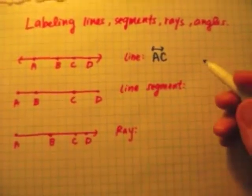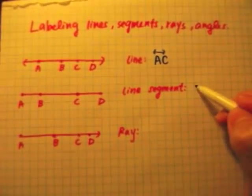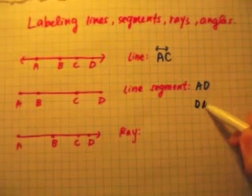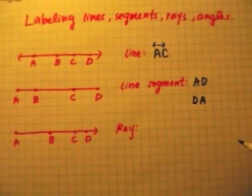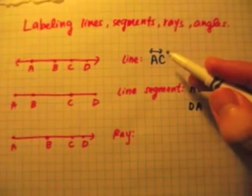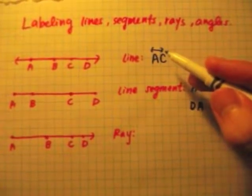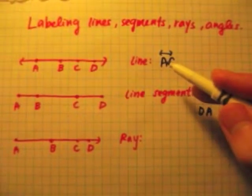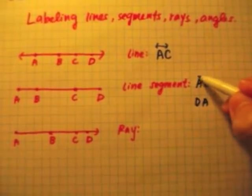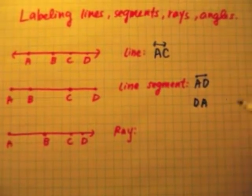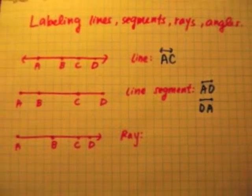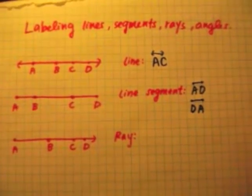I'm going to go with the whole line segment, so I need to use points A and D. I can write them in any order — that doesn't really matter. Just like we draw a mini line on top for line AC, we need to draw a mini segment on top of line segment AD, and a mini line segment on top of line segment DA.